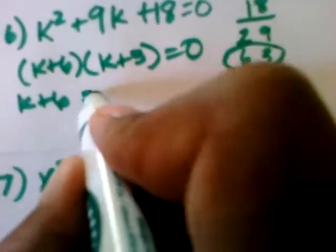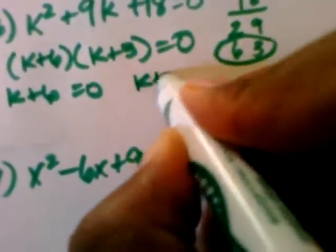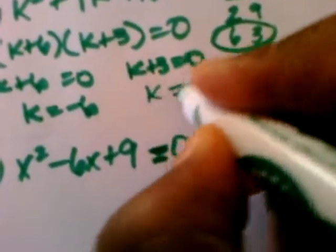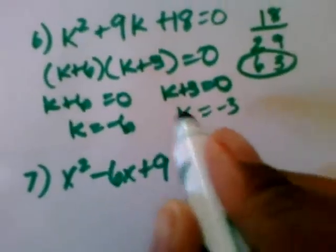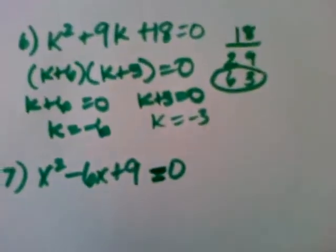k plus 6 equals 0. And k plus 3 equals 0. And in this case, k equals a negative 6. And in this case, k equals a negative 3. So you solve for k in this trinomial there.